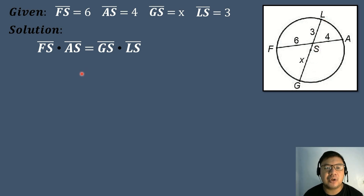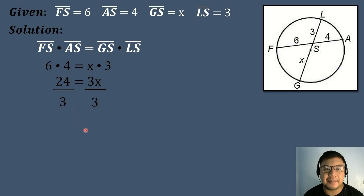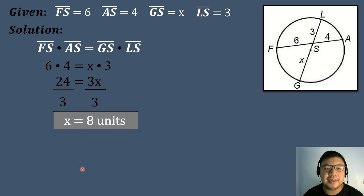We substitute the corresponding values: 6 times 4 equals X times 3. Simplifying, 24 equals 3X. We divide both sides by 3: 24 divided by 3 equals 8. So the measure of segment GS is equal to 8 units.